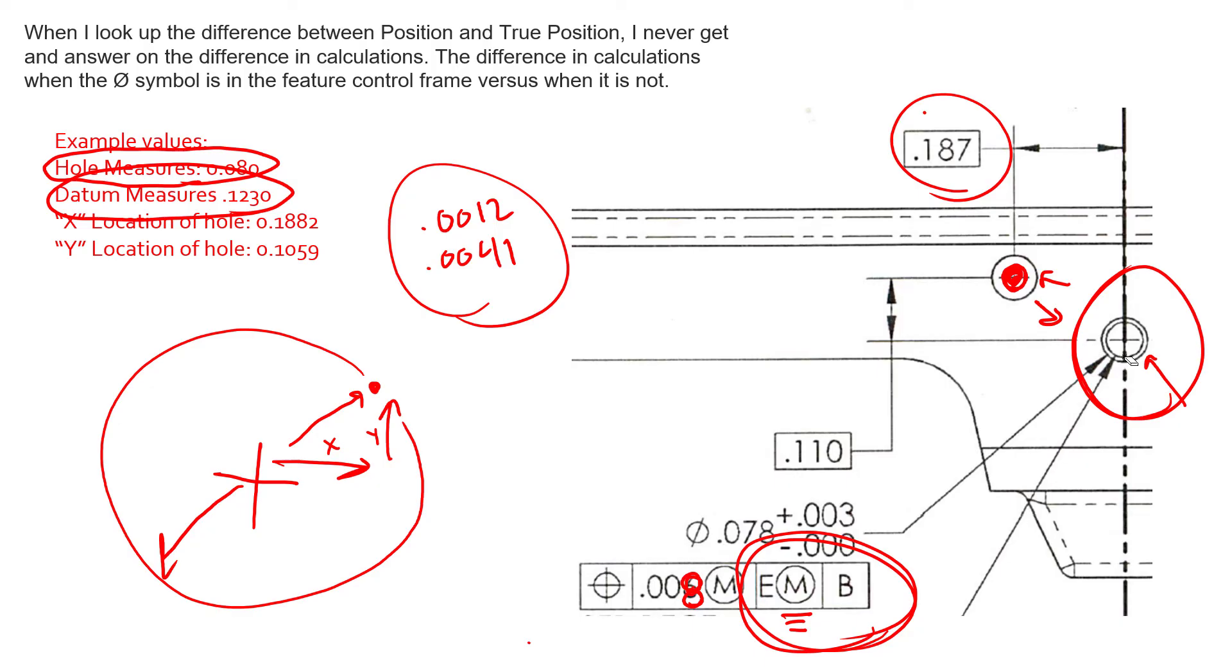The difference in position and true position, they are truly separate entities. True position is the ideal location. Position is the tolerance value. And to calculate diametric deviations, it is simply the Pythagorean theorem.